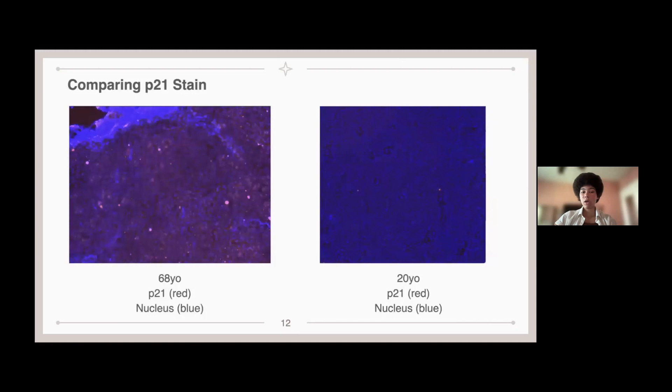And that is also concurrent with the P21 stain, where there are a lot more red dots exhibited in the 68-year-old stain compared to the 20-year-old stain, indicating an increase in P21 with aging.